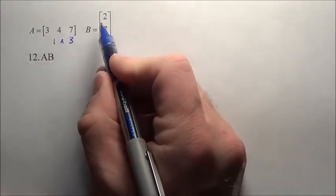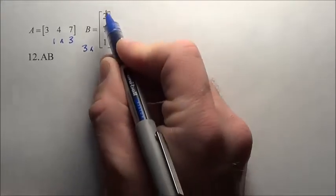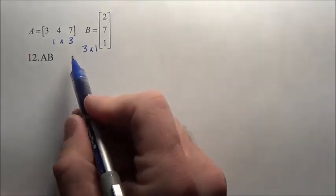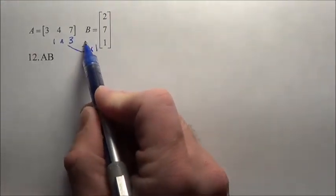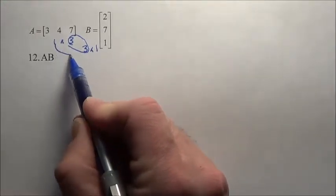This is what? One, two, three columns by what? One row. So we can multiply them because notice the inner numbers are both three. Our answer is simply going to be a one by one.